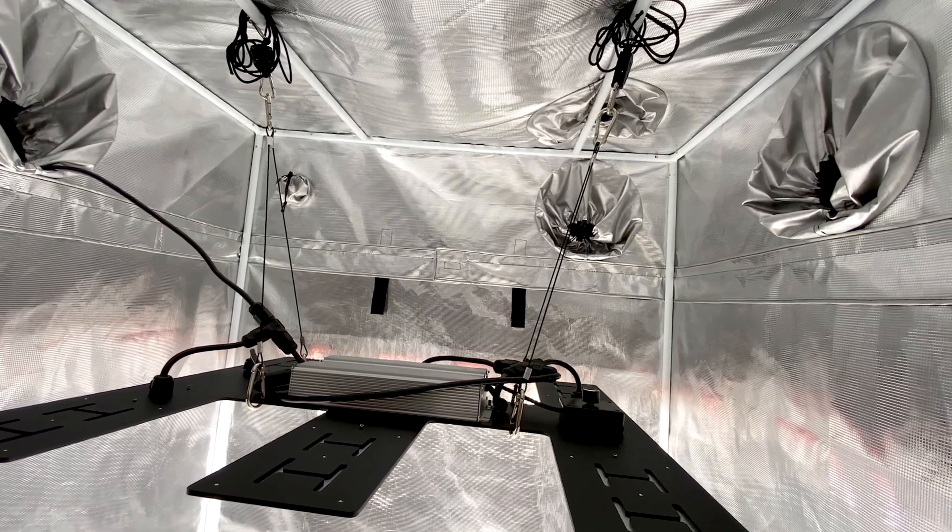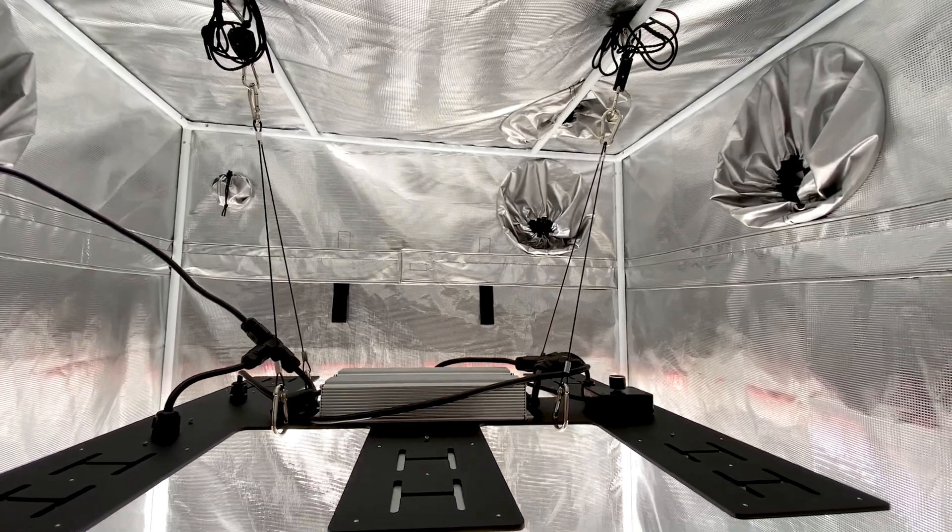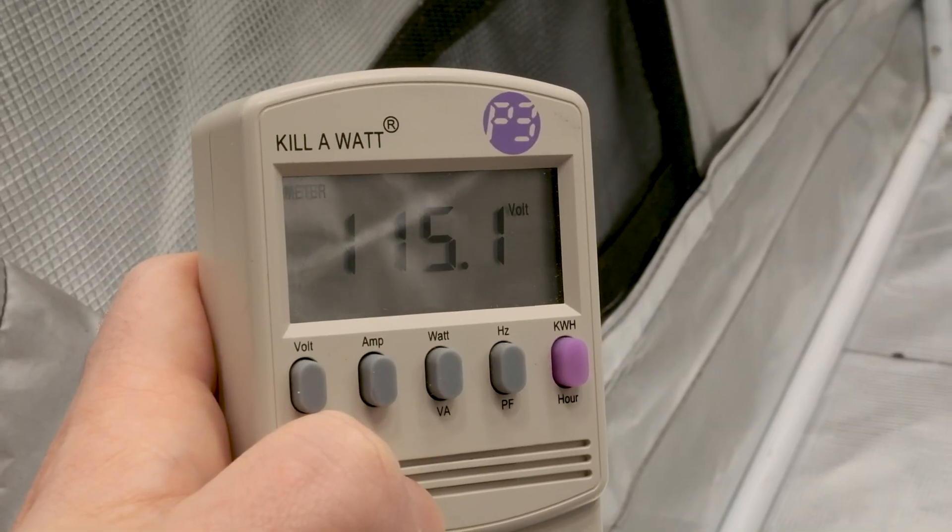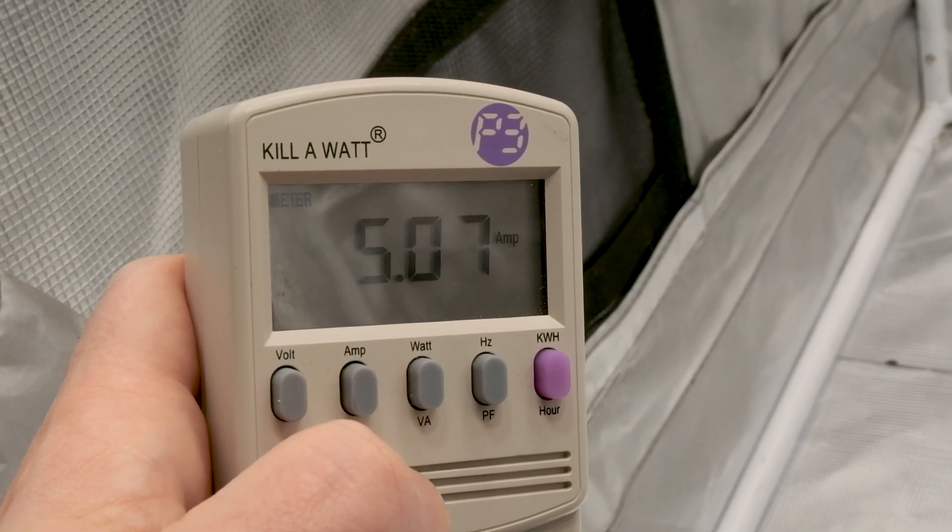The Blackbird draws 600 watts at the wall according to HLG. When I measured this grow light's wattage draw at the wall at 115.1 volts, I received a reading of 581 watts with an amperage of 5.07.